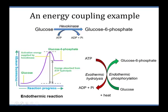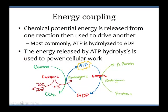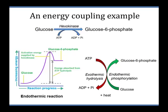Here's a specific single example of energy coupling. We're going to take glucose and make glucose 6-phosphate from it. Remember, we can phosphorylate any molecule, not just ADP into ATP — we can also phosphorylate glucose. Glucose is the very first molecule in glycolysis. When we take a glucose molecule and phosphorylate it, we add the phosphate group onto the 6th carbon — that's why it's called glucose 6-phosphate.